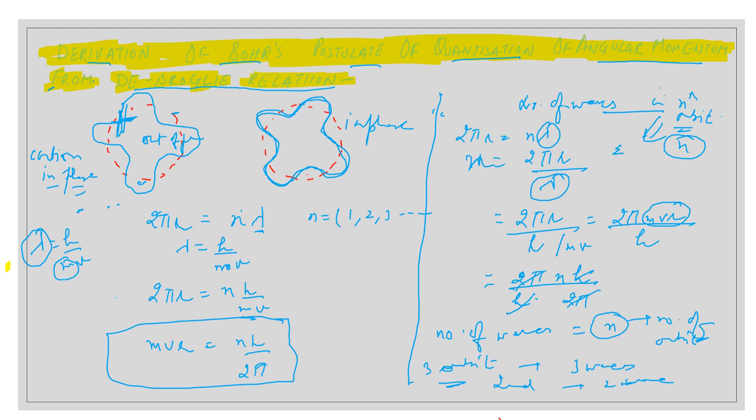But when we are dealing with macroscopic particles, mass of the macroscopic particles is quite large. The wavelength associated will be quite less, so it can be neglected, or you can say their wave nature is negligible. We take just their particle nature.